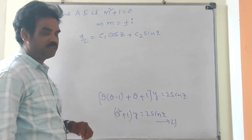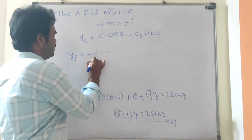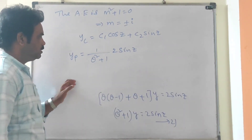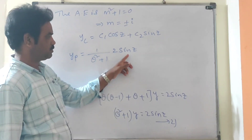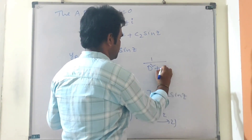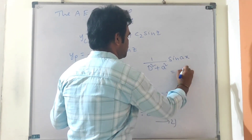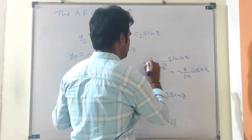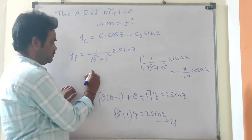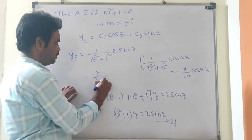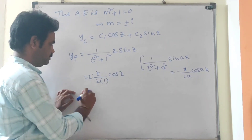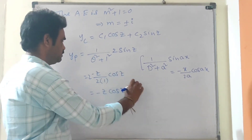Next, find the particular integral y_p. y_p = 1/(θ² + 1) · 2 sin z. Now substituting θ² = -1² = -1, the denominator becomes 0, so this is a failure case. We apply the formula: 1/(θ² + 1)² with the modified approach, giving y_p = -z/2 · cos z · 2 = -z cos z.